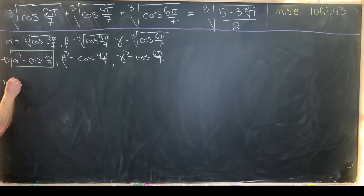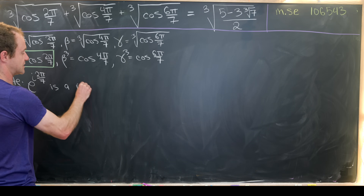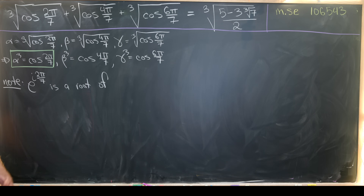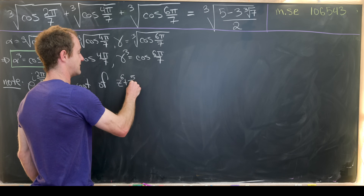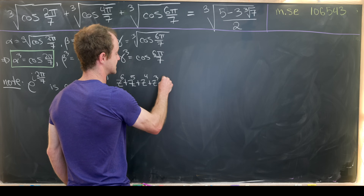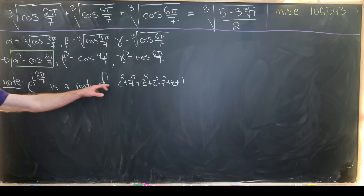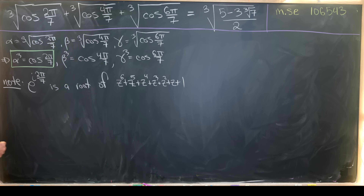We're going to find the minimal polynomial of cos(2π/7) by jumping into complex numbers. The key observation is that e^(i2π/7) is a root of z⁷ − 1, but it's not equal to 1, so it's a root of the factor z⁶ + z⁵ + z⁴ + z³ + z² + z + 1, which is what remains after factoring out (z − 1) from z⁷ − 1.